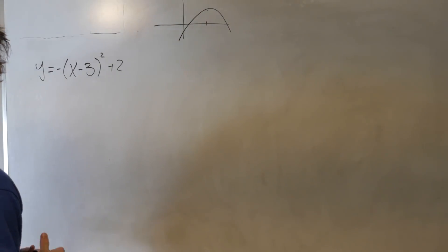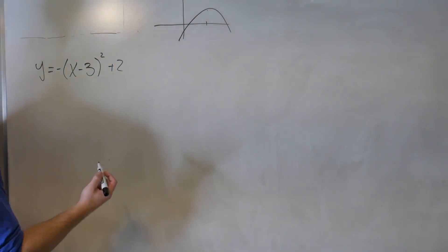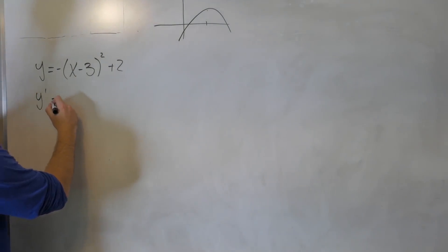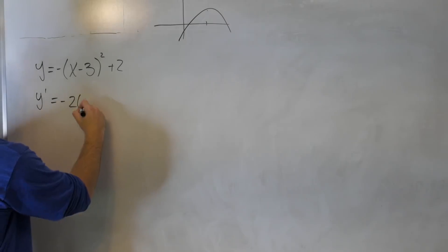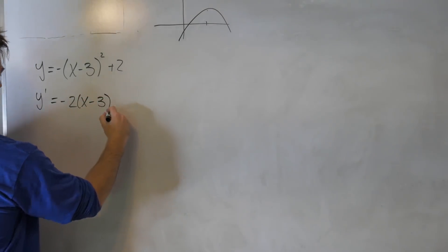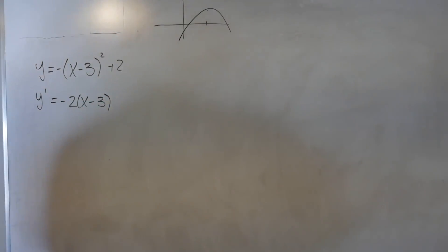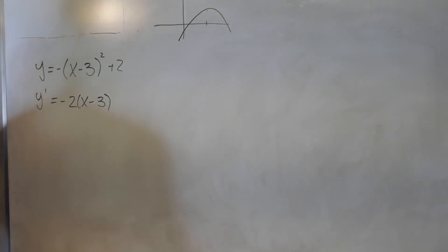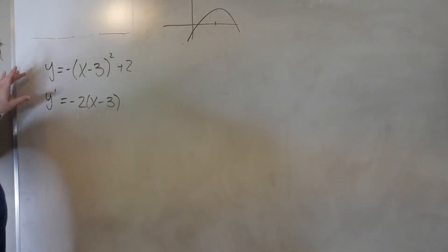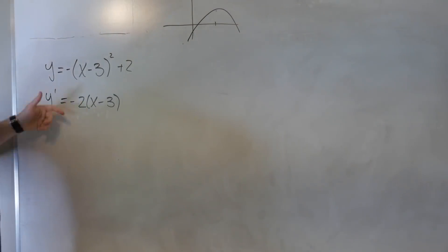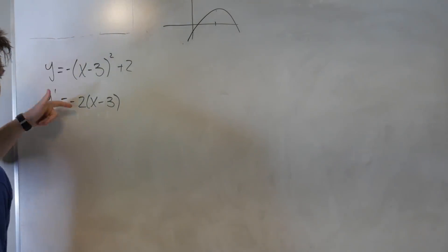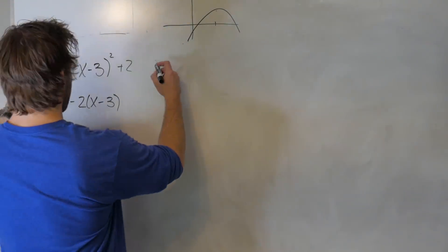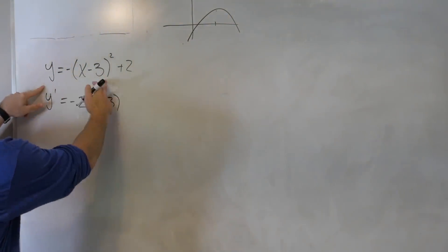If we want to turn this into a differential equation, let's take the derivative with respect to x on both sides, which tells us that y prime is equal to minus 2 times x minus 3. Now technically this is a differential equation, but I want to express this term here in terms of y. I'm assuming you know chain rule to get from here to here. So let's go ahead and rearrange this equation.